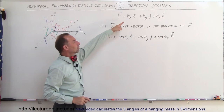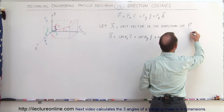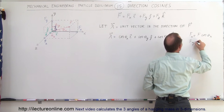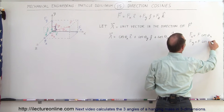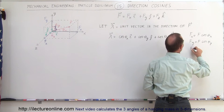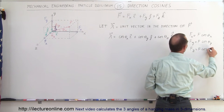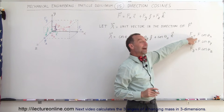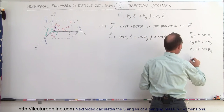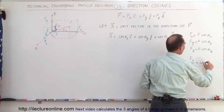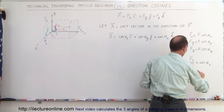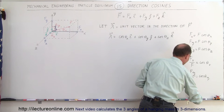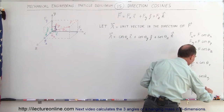Let's see how we can denote f sub x, f sub y, and f sub z. If f sub x equals f times the cosine of theta sub x, f sub y equals f times the cosine of theta sub y, and f sub z equals f times the cosine of theta sub z, then if we divide each of the x, y, z components by the magnitude of the vector, we get: f sub x divided by f equals the cosine of theta sub x, f sub y divided by f equals the cosine of theta sub y, and f sub z divided by f equals the cosine of theta sub z.